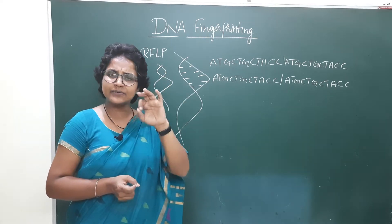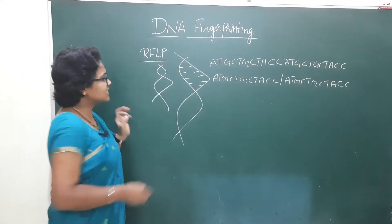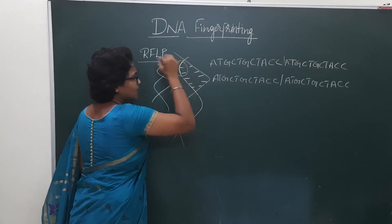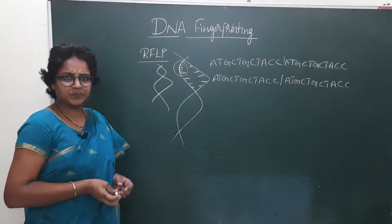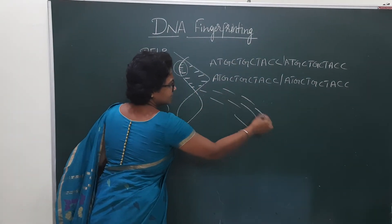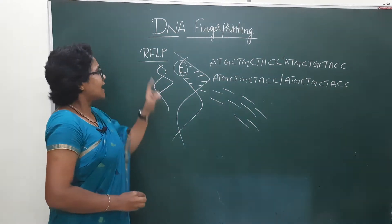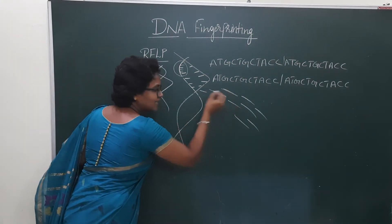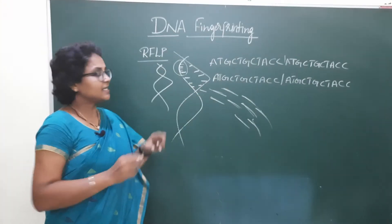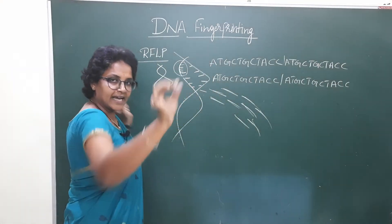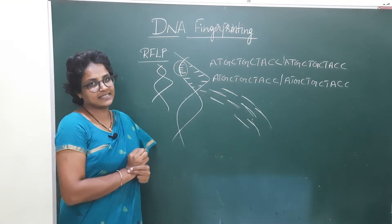Since these sequences are repeated many times, they are called repetitive DNA sequences. They are also called restriction fragment length polymorphisms because we cut this part — this small part — by using restriction endonuclease enzymes. Hence they are called restriction fragment length polymorphisms.